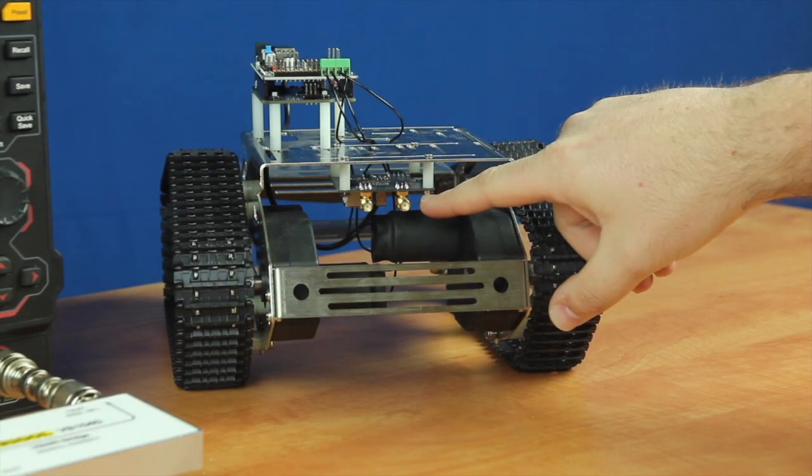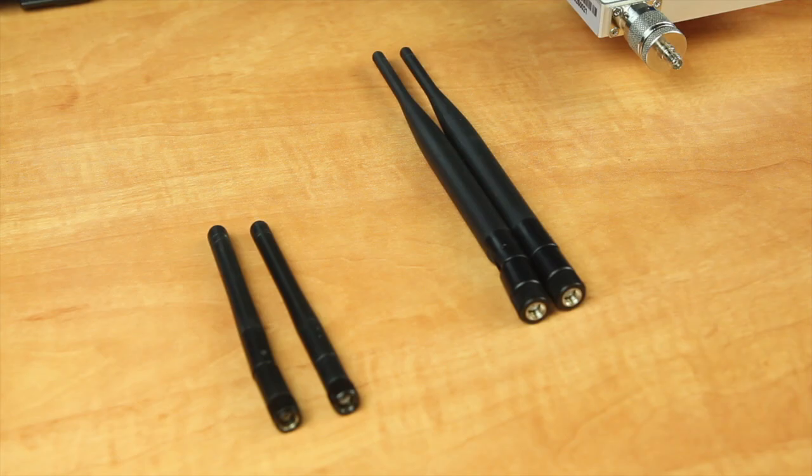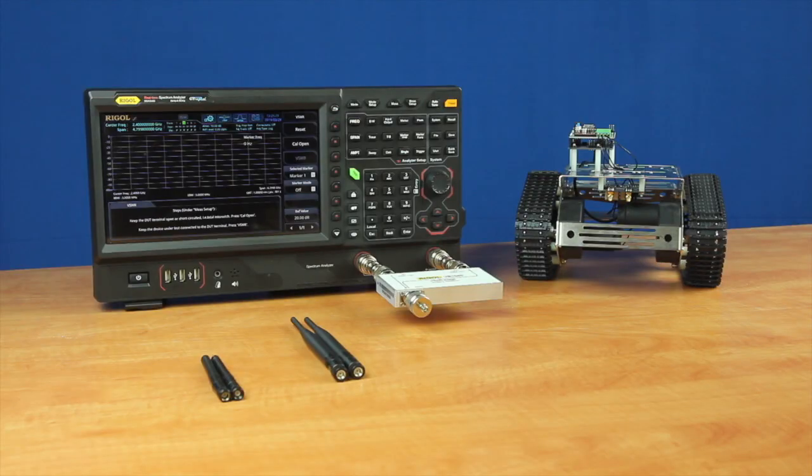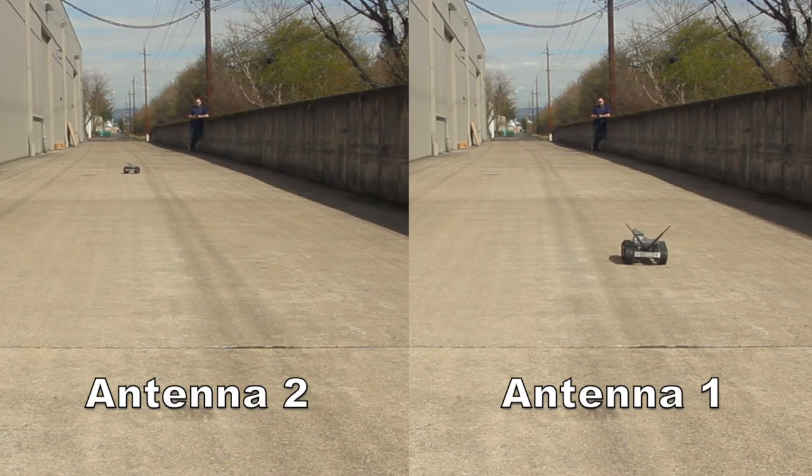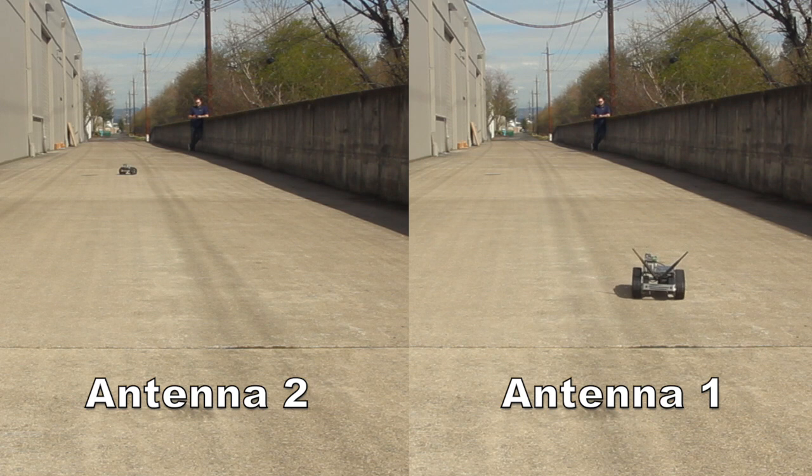Next we determined which set of antennas would give us the largest range. While testing the antennas we used a VSWR bridge with a spectrum analyzer to test the VSWR measurements of each antenna before performing a real-world test to confirm our results.